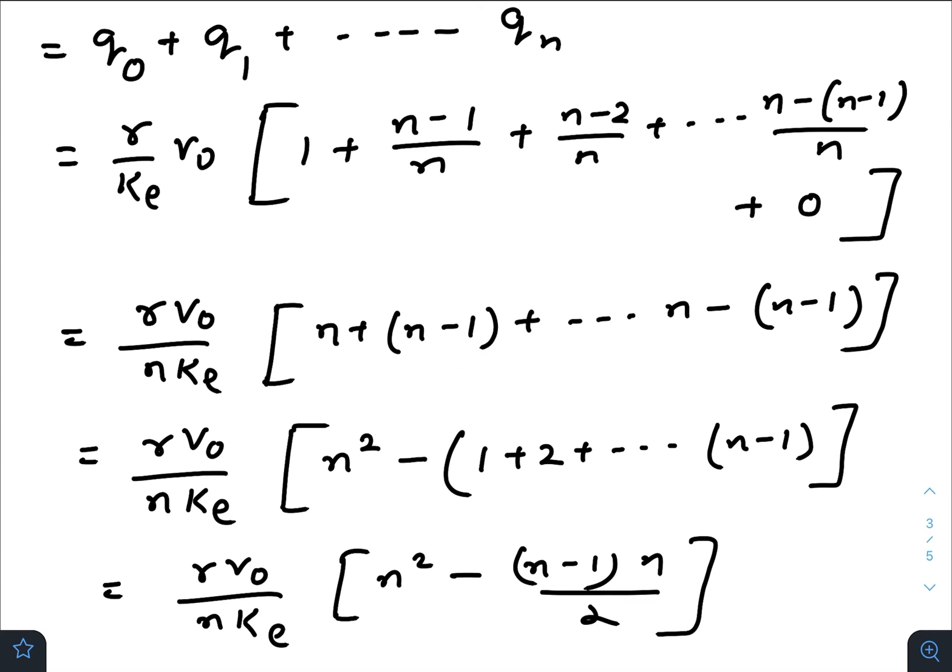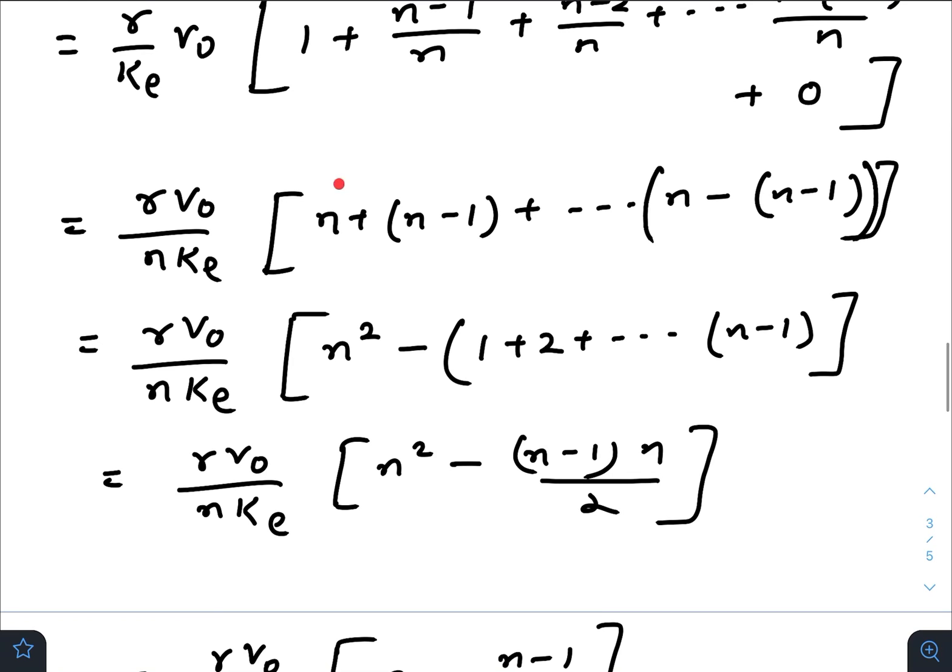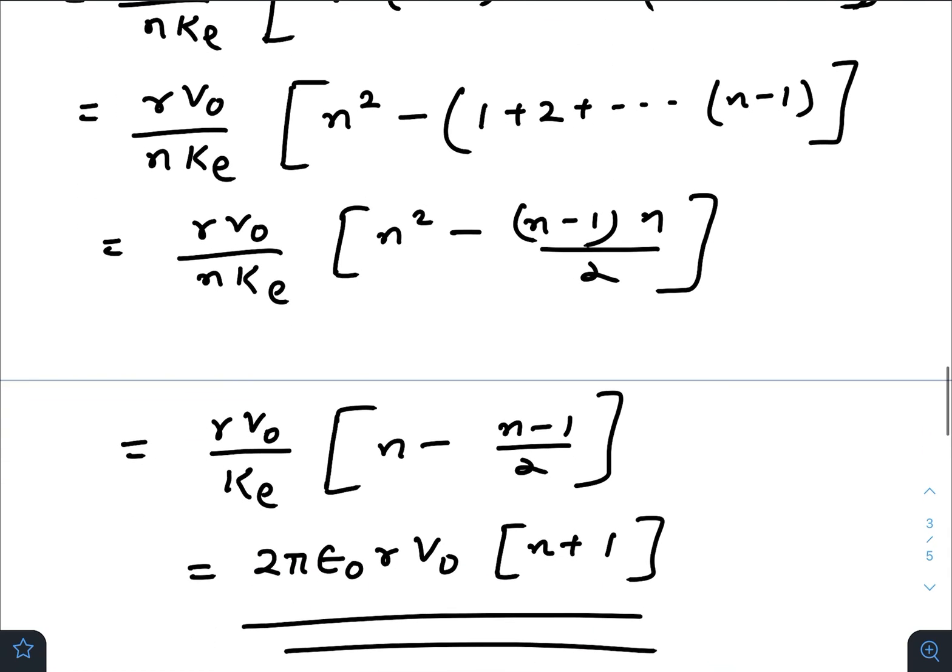Taking all, adding up all the n's—we get there are n number of n's, so it will be n². Taking minus common, we get 1 + 2 + ... + (n-1), which equals (n-1)n/2.